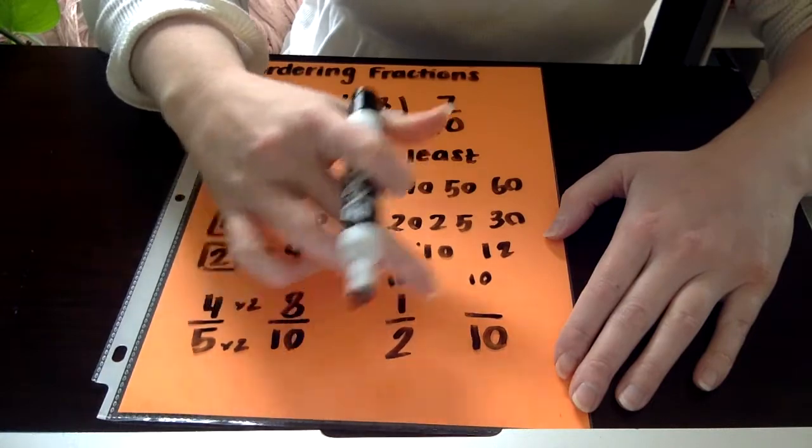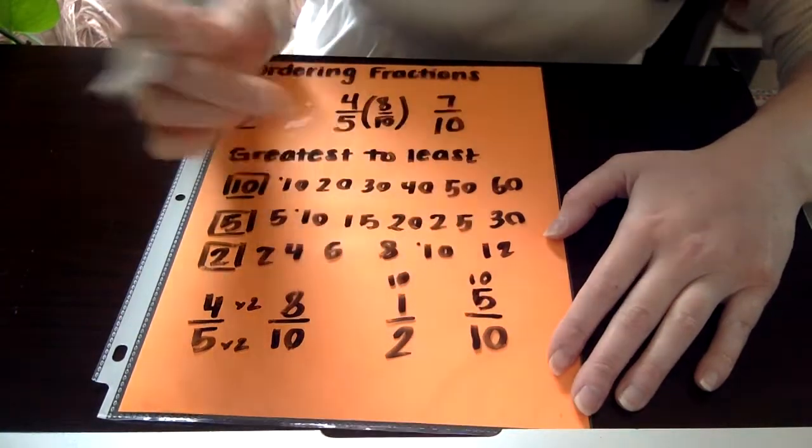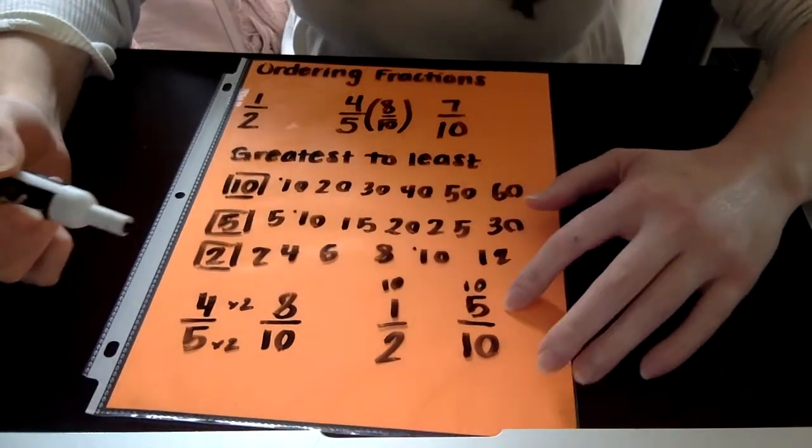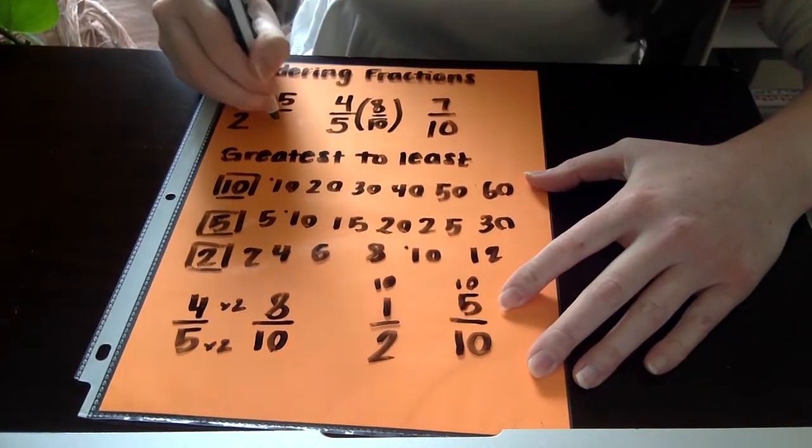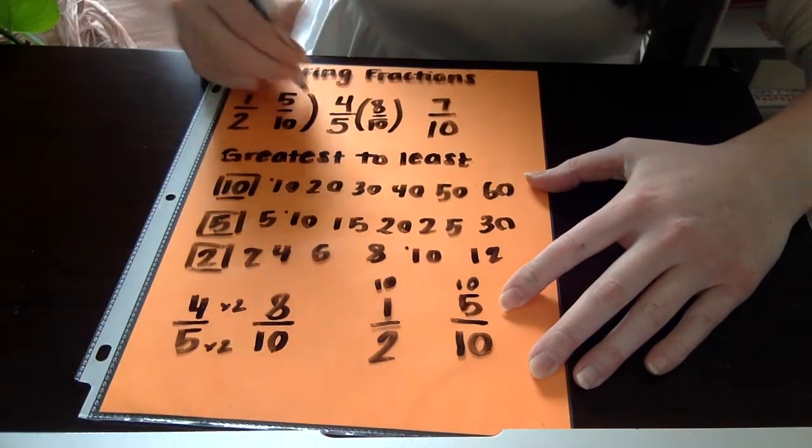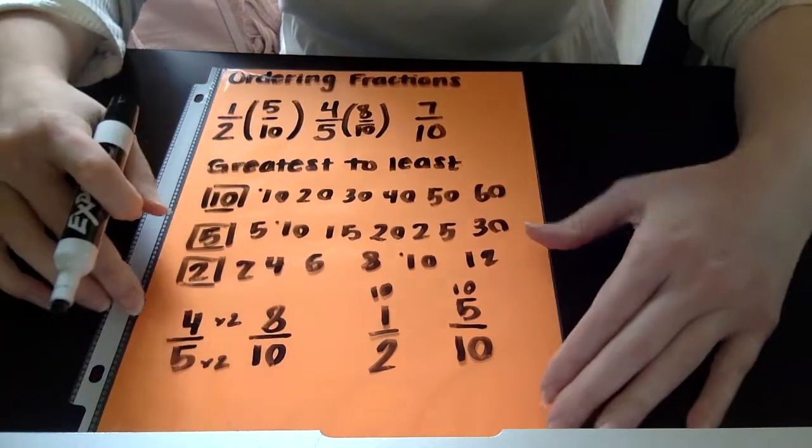So now I can ask myself, 2 times what gives me 10? Well, 2 times 5 gives me 10, right? That means that my equivalent fraction for 1 half with a denominator of 10 is 5 tenths. So I'm going to put that over to the side as well, and I'll put that in parentheses so I know that that's my equivalent fraction, not my original.